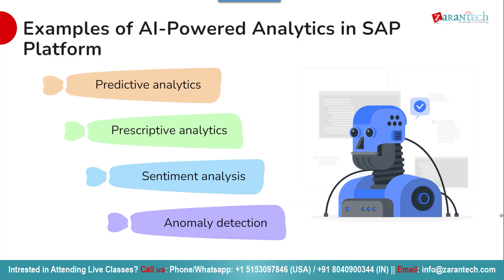The SAP platform offers a range of AI-powered analytics capabilities. Predictive analytics enables organizations to anticipate future trends and make proactive decisions. Prescriptive analytics takes it a step further by providing recommendations and guiding actions based on data-driven insights. Sentiment analysis allows businesses to understand customer emotions and preferences, enabling personalized experiences and improved customer satisfaction. Anomaly detection identifies unusual patterns or deviations from the norm, helping organizations detect potential issues early.